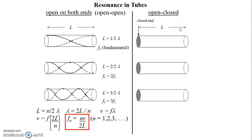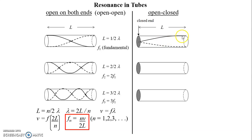Now let's look at the open-closed tube. Again, capital L is the length of the tube. We have a different situation: the end open to the air will be an antinode, but the closed end has to be a node. Pause the video and try to draw the shortest wavelength that fits in the first tube, where one end is a node and the other is an antinode. The next tube follows the same rule — node at the closed end, antinode at the open end — trying to fit as few cycles as possible. Pause the video and try to draw the third one following the same rules.